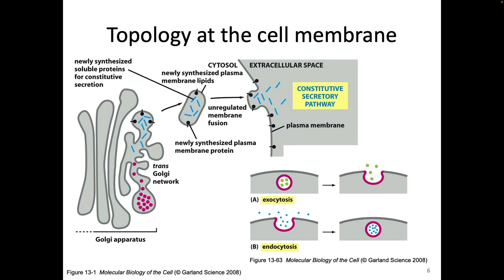This is referred to as the constitutive secretory pathway. Constitutive in biology basically means automatic, or by default — that's what's going to happen if you don't give any other instructions. What I'm showing you here is exocytosis, where we have some cargo inside a vesicle that gets secreted by fusing with the membrane.